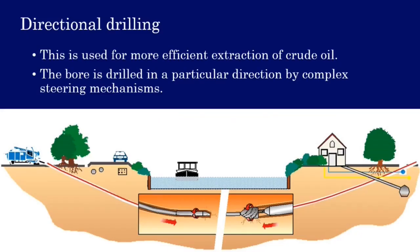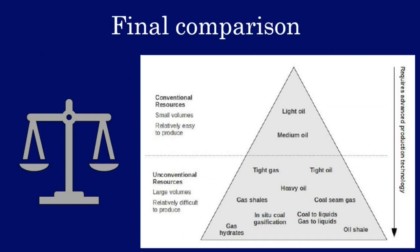This is directional drilling. It is more efficient than hydraulic drilling because in this way you actually get to control the direction and steer the drill head. This is the final comparison chart. The smaller part depicts conventional oil, available in lesser quantity and relatively easy and economic to produce but will finish soon. The broader base depicts unconventional oil, present in a much larger amount but relatively very difficult to produce.